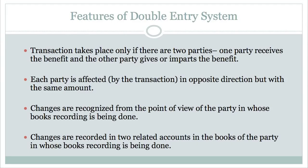In this particular system, a transaction takes place only if there are two parties. For example, a transaction takes place between me and you: one party will receive certain benefit and the other party will give some benefit. I may receive something and on the opposite side you may give something. Each party is affected in the opposite direction but with the same amount.